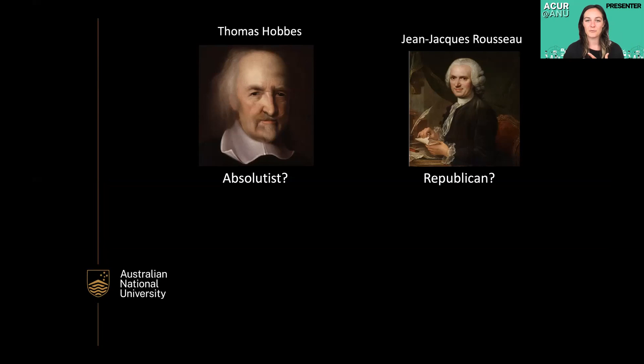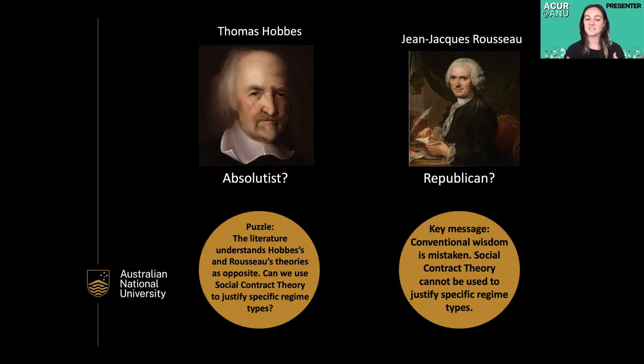During my research, however, I found that contrary to the literature, Hobbes and Rousseau actually present what can be understood as essentially the same structural theory of government. So my puzzle is: can we use social contract theory to justify specific regime types such as absolutism or republicanism? My key message, which you'll take home, is that conventional wisdom is mistaken — social contract theory cannot be used to justify specific regime types.